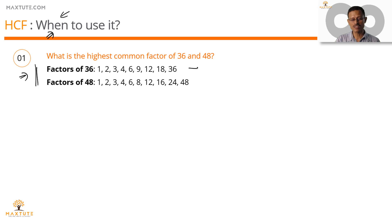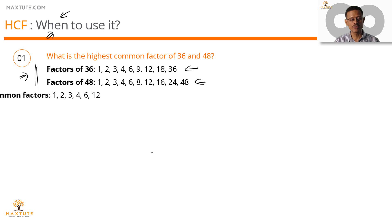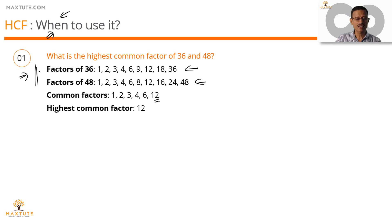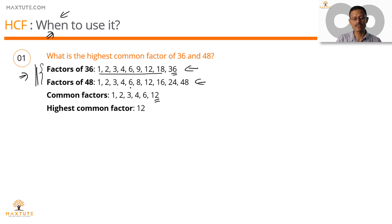Here are the factors of 36 and the factors of 48. We would have listed the factors common to both these numbers. The largest such common factor is the HCF. The clue to knowing when to find the HCF comes from this step — factorizing 36 and 48. We have broken down 36 into smaller parts, and we have broken down 48 into smaller parts.